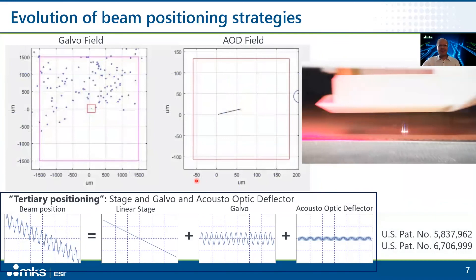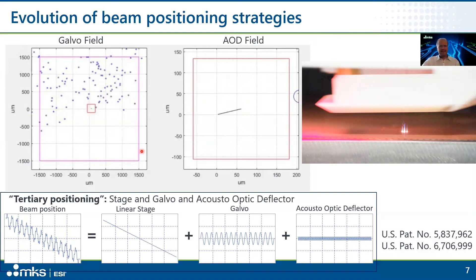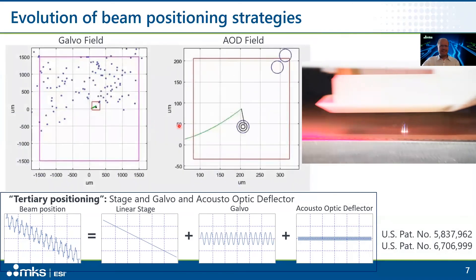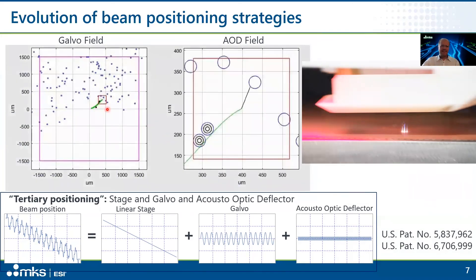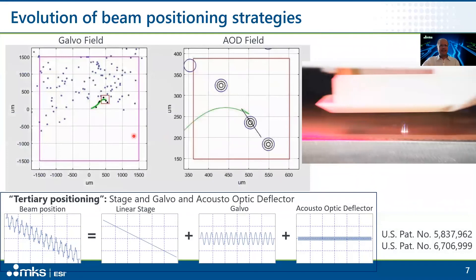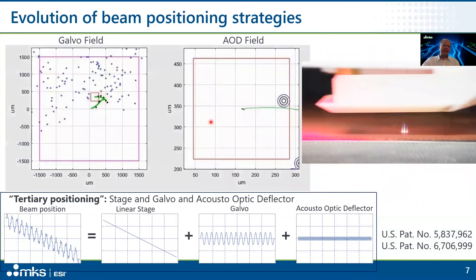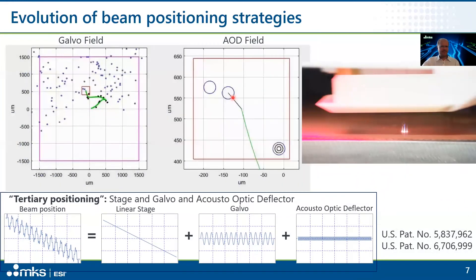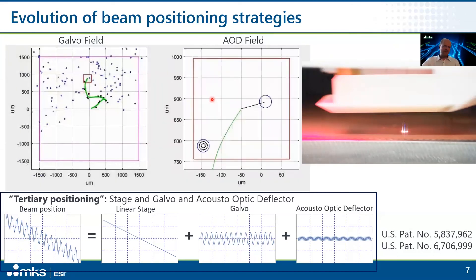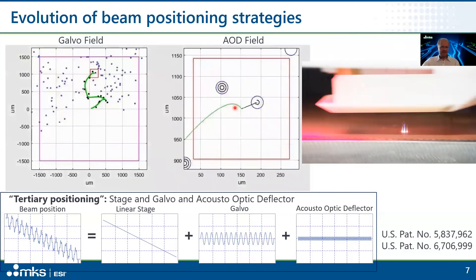Consider our galvo scan field — the pink square — and the blue dots, the vias we want to drill. Here we have our tiny AOD scan field that is blown up on the right. Even though the AOD scan field is very, very small, it does a lot of work because the galvos no longer need to move and settle at any specific location, but can just cruise along into the vicinity of the vias.